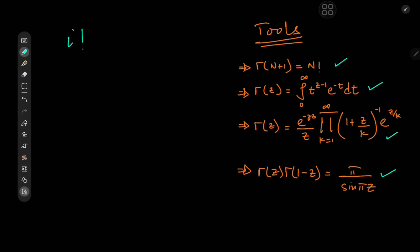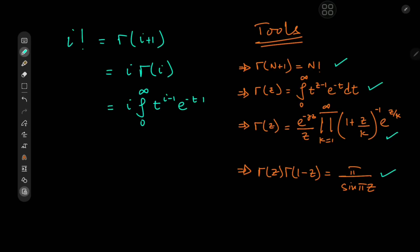The first thing we can do is restate the problem of i factorial as gamma(i+1), and from the recursion formula, that means we have i times gamma(i). Using the integral form for the gamma function, we have i times the integral from 0 to infinity of t to the i minus 1 times e to the negative t dt. Unfortunately, we can't tackle this integral directly, but there's a workaround that rests on the idea of the absolute value of i factorial.